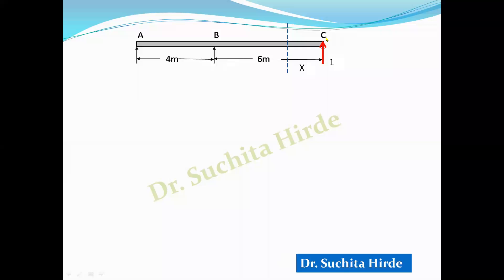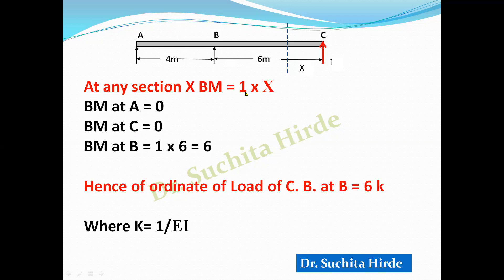We will draw the deflected shape due to unit force using the conjugate beam method. In the conjugate beam method, the imaginary beam is loaded with the M/EI diagram of the original beam, so we first draw the bending moment diagram. Bending moment at A is zero (simple support), at C is zero (free end), and at B it is 1 × 6 = 6. Since bending moment at any section x equals 1 × x, the variation is linear.